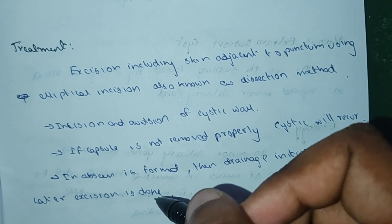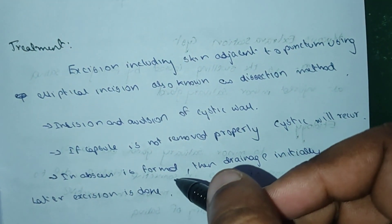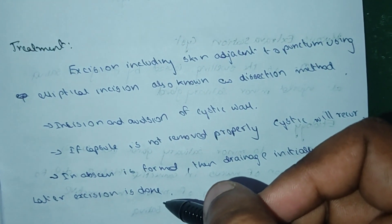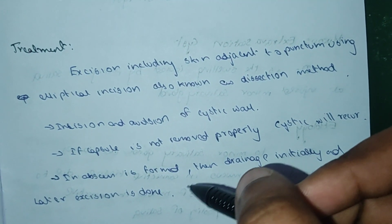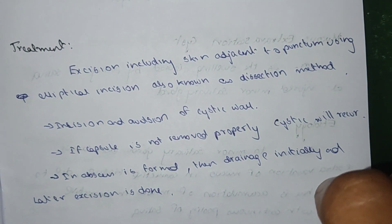If the capsule is not removed properly, the cyst will recur. If an abscess is formed, drainage is done initially and later excision is done.